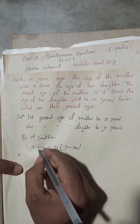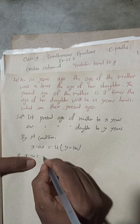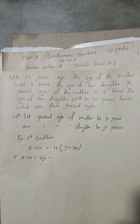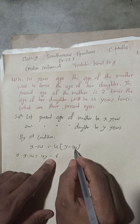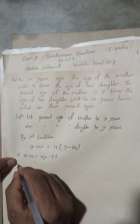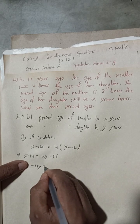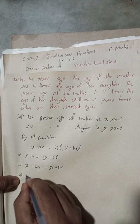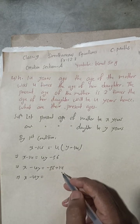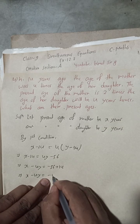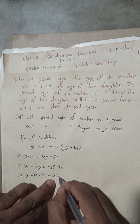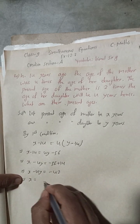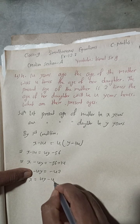Now we solve: X minus 14 = 4Y minus 56. This implies X minus 4Y = minus 56 plus 14, which gives X minus 4Y = minus 42. This can be rewritten as X = 4Y minus 42. This is equation 1.